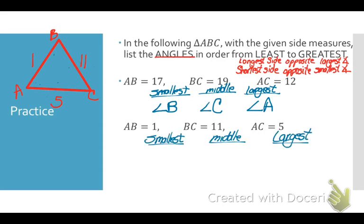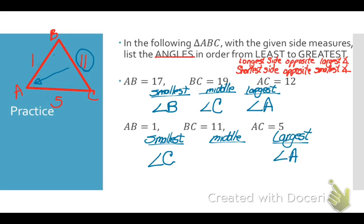With side lengths 1, 11, and 5, I identify my smallest angle: the shortest side is AB and opposite AB is angle C, so my smallest angle is C. My longest side is BC and opposite that is angle A, making it my largest angle, with B in the middle. Those are my angles listed from smallest to largest. I'm going to give you a question like this on the unit test.